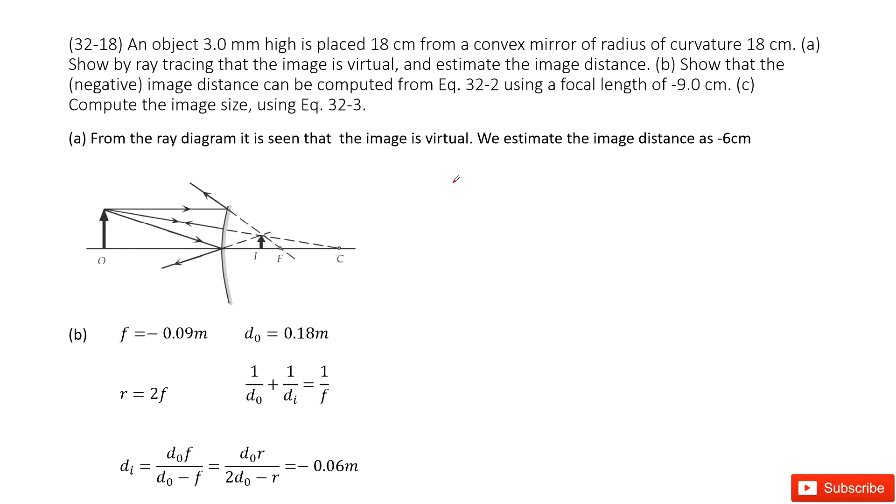Now you can see we have a convex mirror. The radius is given and the object distance is 18 centimeters. Part one asks you to show by ray tracing that the image is virtual and estimate the image distance.